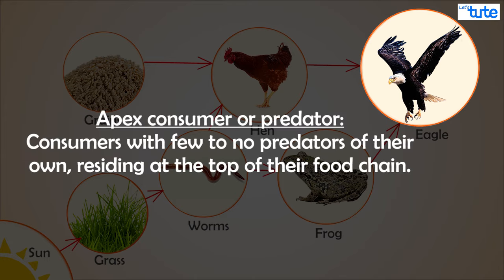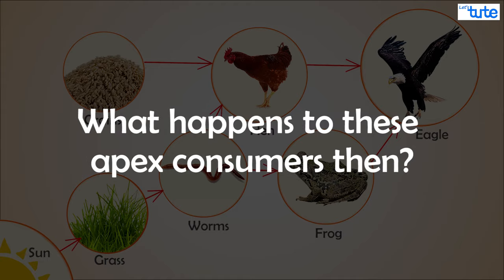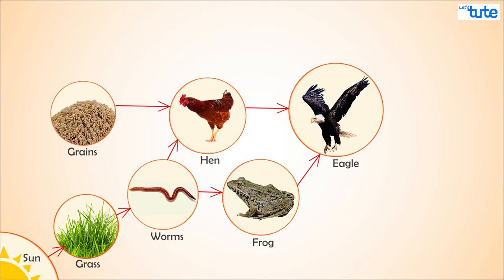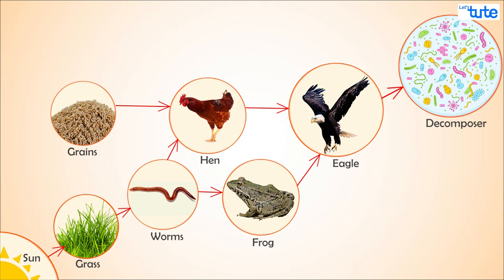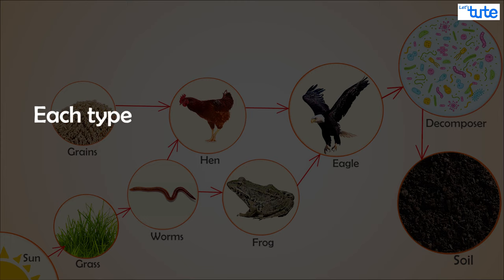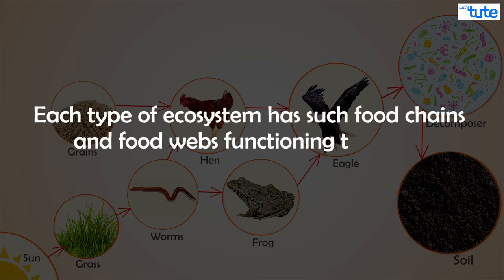Such organisms that are not prey for any other organism are called apex consumers or predators. They are always at the highest point in the food chain. But what happens to these apex consumers? They ultimately die and are decomposed by the next set of biotic components — the decomposers — and the components are added back to the soil.